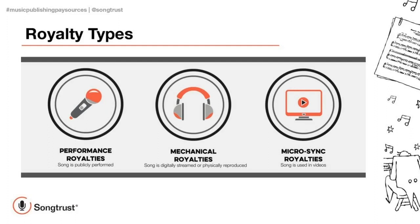Micro-sync royalties and licenses are just the synchronization of music with a moving image, like regular sync, but just in smaller bulk uses. This most commonly occurs on online video sharing sites such as YouTube. These micro-sync licenses can generate both performance and mechanical royalties for you. For example, if you monetize a YouTube video, you're going to be generating both performance and mechanical royalties. If you're looking to get a deeper dive on the two halves of a song plus the royalty types they each generate, make sure to check out our Music Publishing 101 sessions, which you can access through the link in the chat.